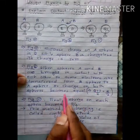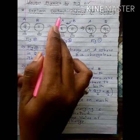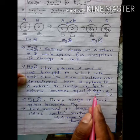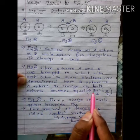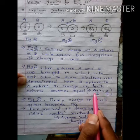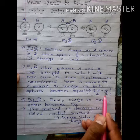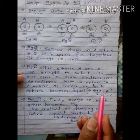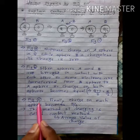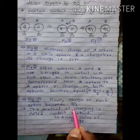The charge on both spheres becomes equal. Whenever we consider the contact method, we find the average value of charge. Charge on the first sphere is Q, charge on the second sphere is 0, so the average value is (Q + 0) / 2. The charge on each sphere becomes Q/2, and this is shown in Figure C.